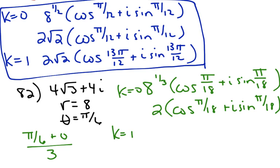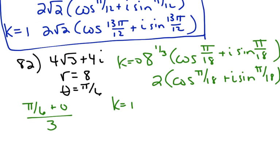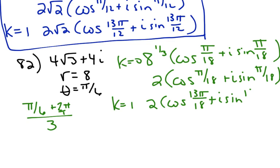For k=1, we change to 2pi: 13pi/6 divided by 3 gives 13pi/18. Since that's not a special angle, we won't try to simplify it further. Since we're finding cube roots, we need k=0, 1, and 2.